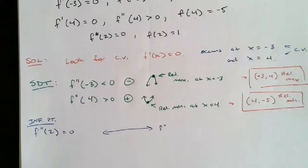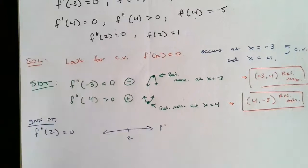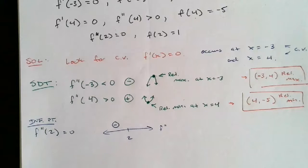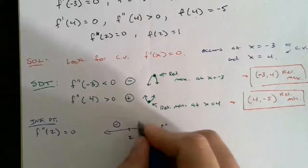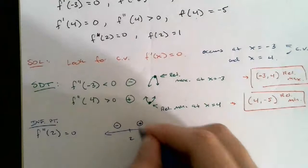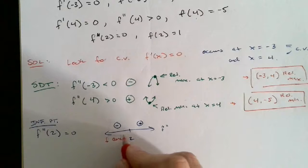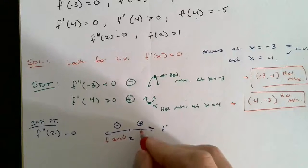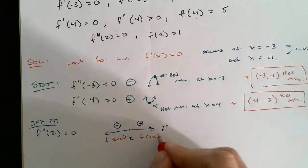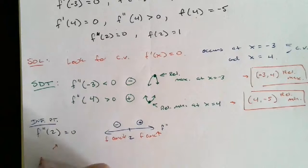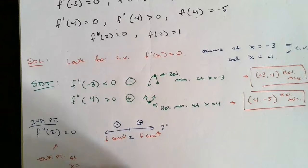For the inflection point test, we put x=2 on the f'' number line and check what happens to the left and right. We know f''(-3)<0, so f'' is negative on the left side, and f''(4)>0, so f'' is positive on the right side. The concavity does change there — the original function goes from concave down to concave up — so we have a confirmed inflection point at x=2.